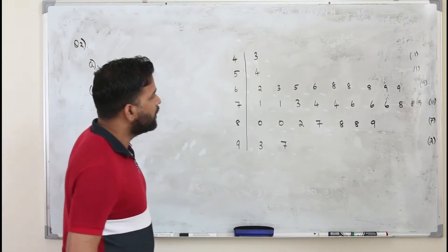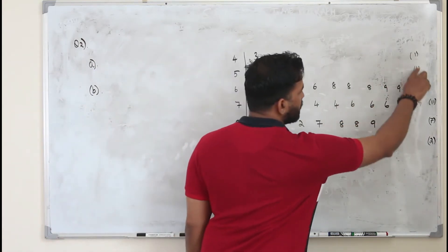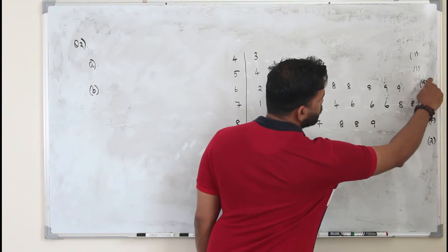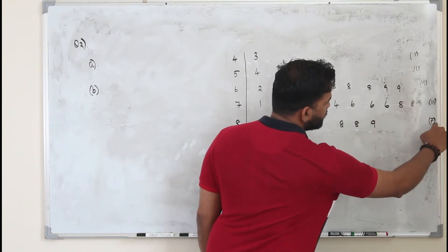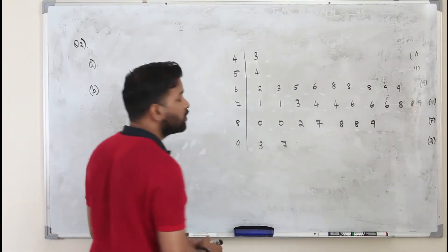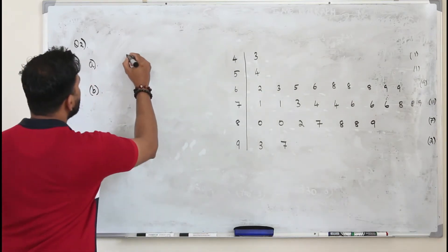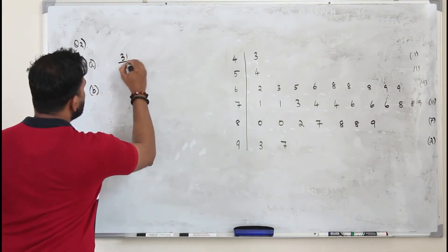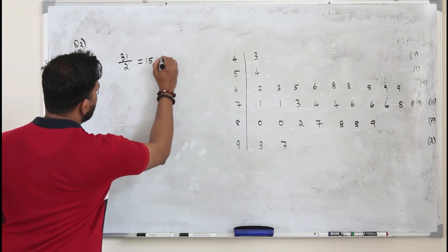So if you want to find the median, first take the total number of entries, which is 22, 24, 31. Total number of entries 31 divided by 2, so you get 15.5.